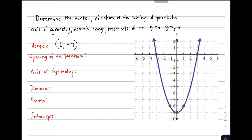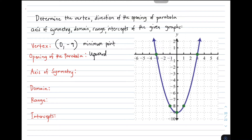Now, for the opening of parabola, look at the arrowheads. The arrowheads point upward. So therefore, the opening of the parabola is upward. We can also identify whether the vertex is a minimum or maximum point. Since the parabola opens upward, the vertex is considered as the minimum point.